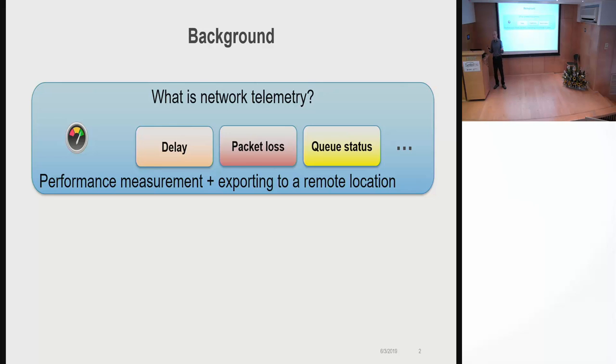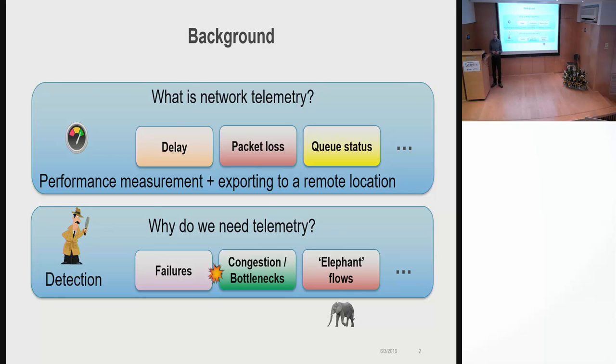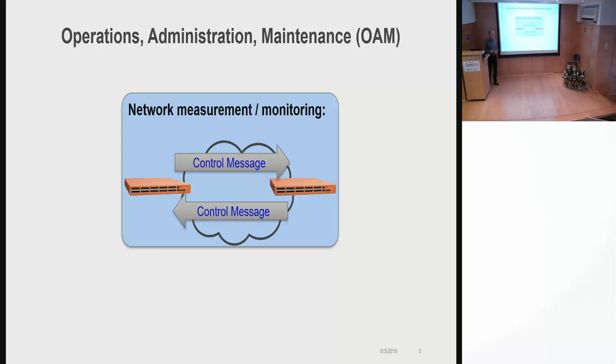A little bit of background. Network measurement is important in high-speed networks, specifically it's important in order to detect failures, congestion, anomalies, elephant flows. The term OAM has been around for many years and refers to the ability to measure and monitor a network. In the last few years we hear more and more the term network telemetry, which refers to the ability to measure and also export these measurements to an external point, a remote location.